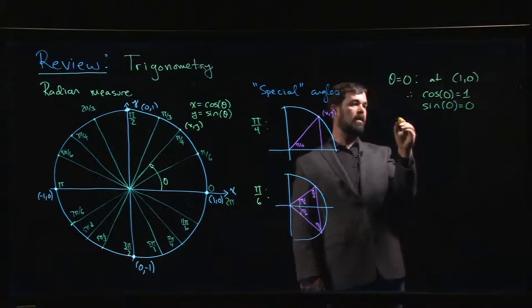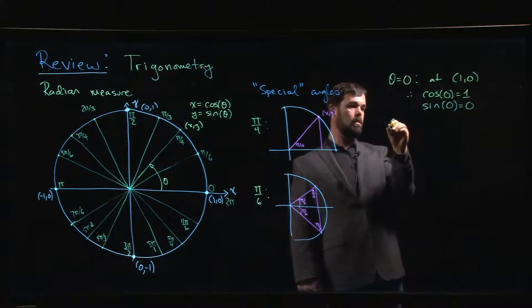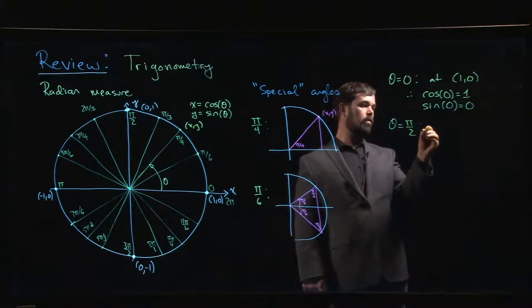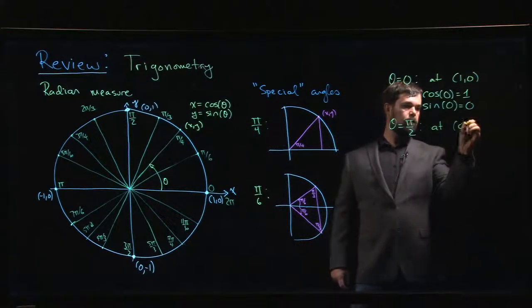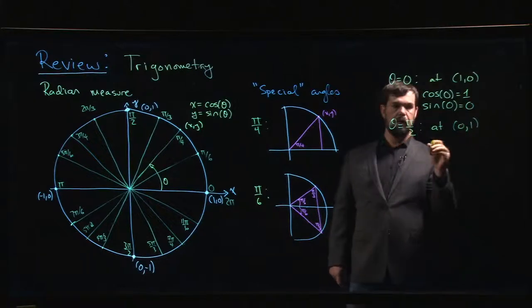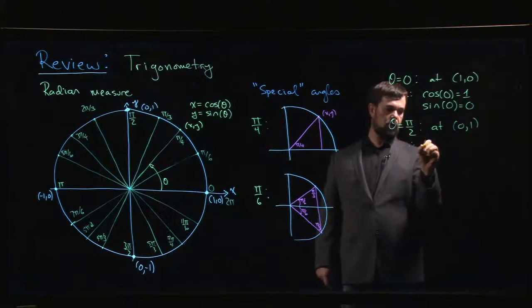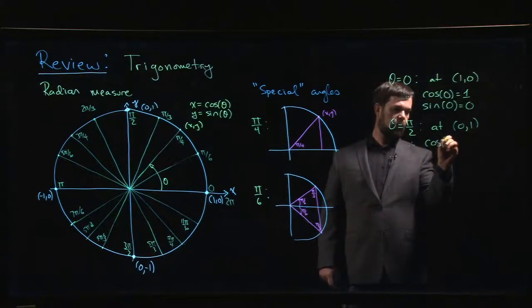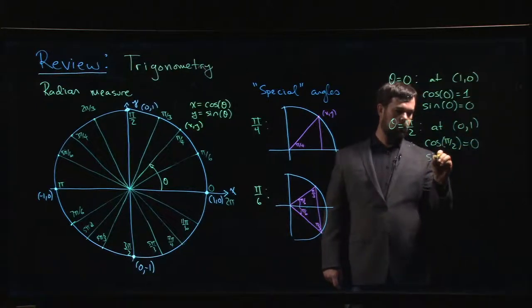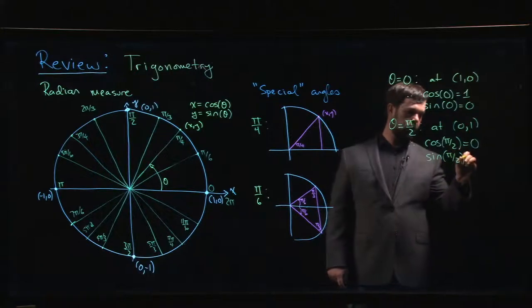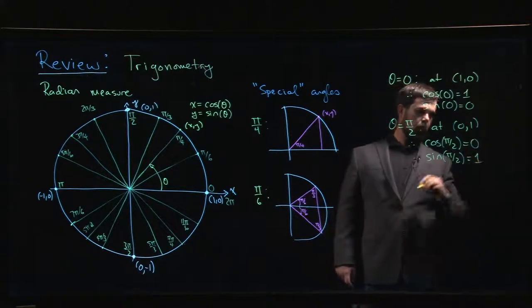When theta is equal to pi over 2, then you're at the point (0,1). So that means that cosine of pi over 2 is 0, and sine of pi over 2 is 1.